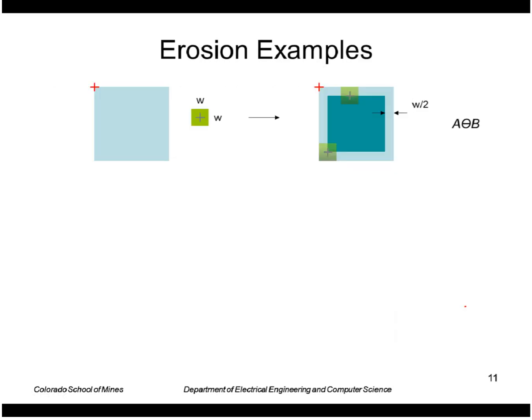Another set of examples using a different way to display. Imagine that set A is a collection of points in the square here. My structuring element B is just a little square of size w by w with the origin in the middle. The erosion of A by B is just this darker gray area inside the original large area because only those places that are completely inside the original area can output a one.